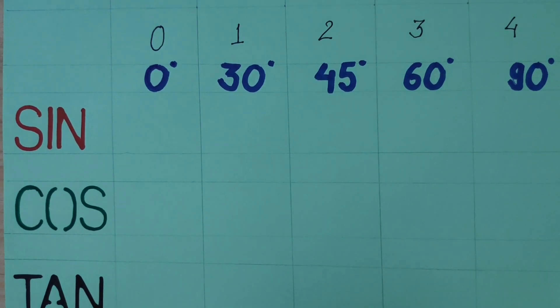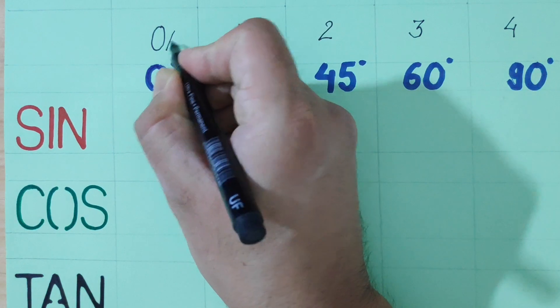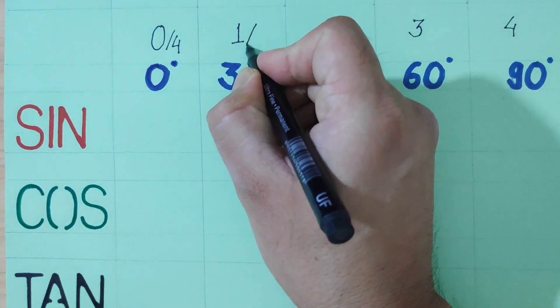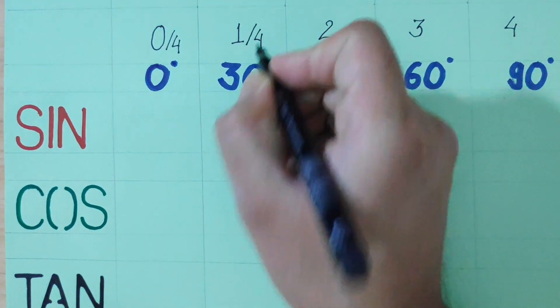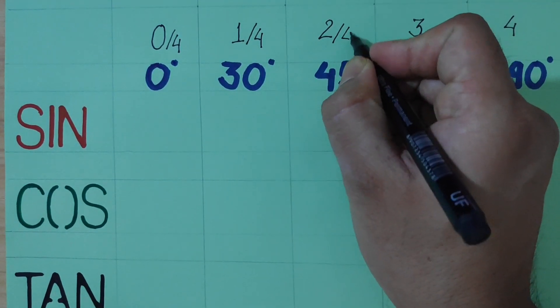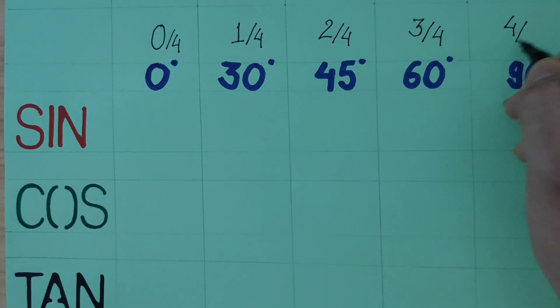Then the second step, we will divide all of them. 0 over 4, 1 over 4, 2 over 4, 3 over 4, and the last one is 4 over 4.